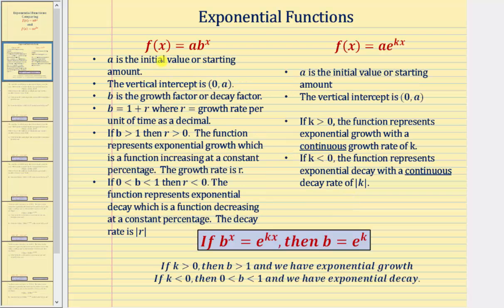When we have an exponential function in the form f of x equals a times b raised to the power of x, a is the initial or starting amount, the base b is equal to one plus r, where r equals the growth rate per unit of time as a decimal. If the base b is greater than one, then r is positive, so we have exponential growth at a rate of r per unit of time.